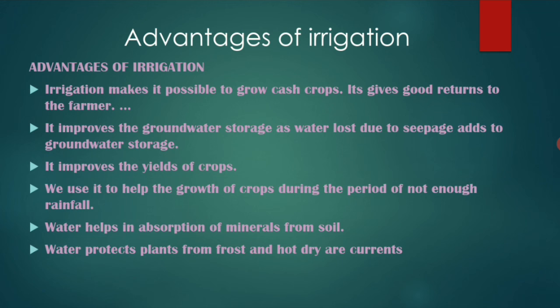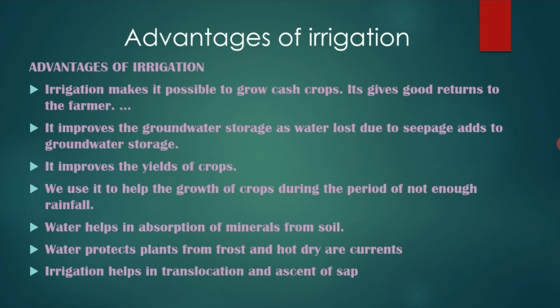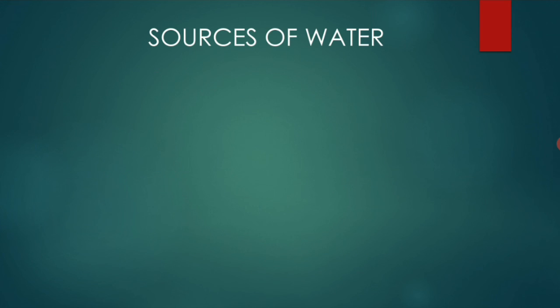Water protects plants from frost and hot, dry currents. During summers there are hot and dry currents from which water also protects, as well as from freezing. Irrigation also helps in translocation and ascent of sap — water is transported from roots to the leaves, and it also helps in the translocation of food.